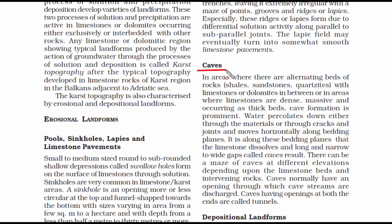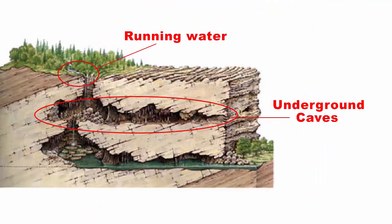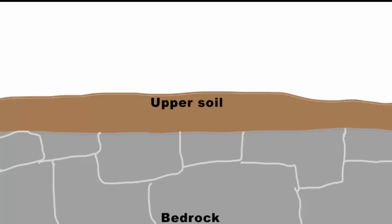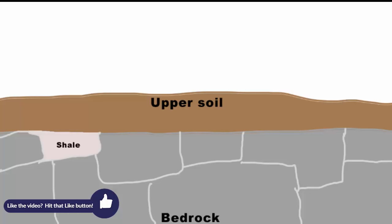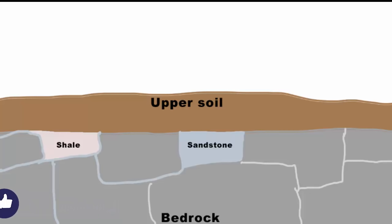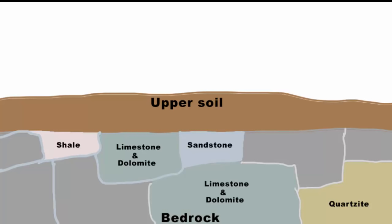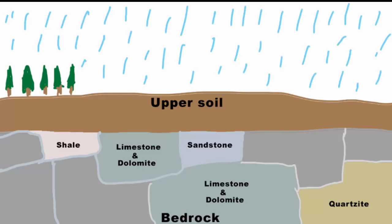The second type of groundwater erosional landform is caves. These are underground caves that form because of running water and they usually occur where there is an alternating bed of rocks. Alternating bed means if there is a rock bed of shale, then a rock bed of sandstone, then again quartzites, and in between these three rock beds you have limestones or dolomites. These rock beds are dense, massive and thick. When water enters the soil, it initially goes vertically down and then flows horizontally through soil plains until it reaches the rock bed.